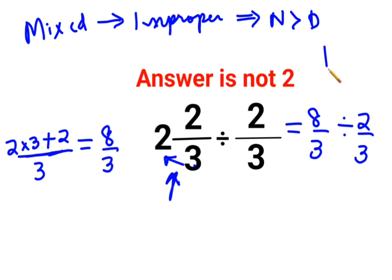Now, whenever you have division, you will follow the rule of KCF where K stands for keeping the first number as it is, C stands for changing the division sign to multiplication, F stands for flipping or taking the reciprocal of 2/3, which is 3/2.